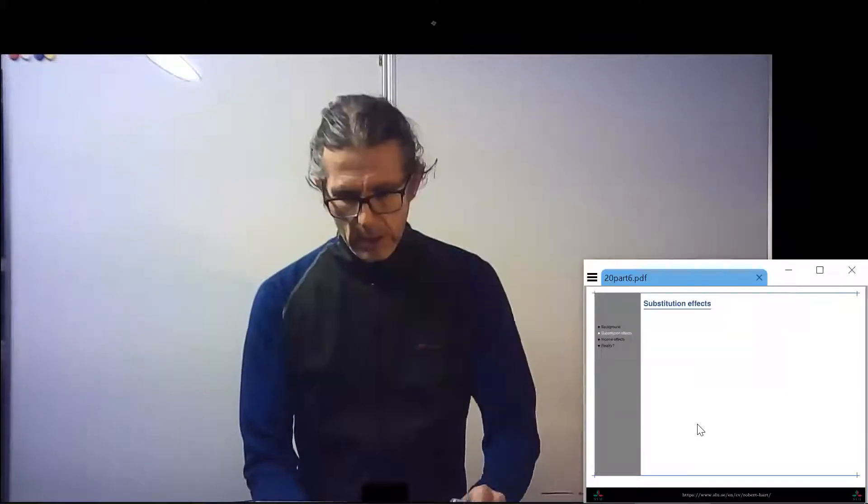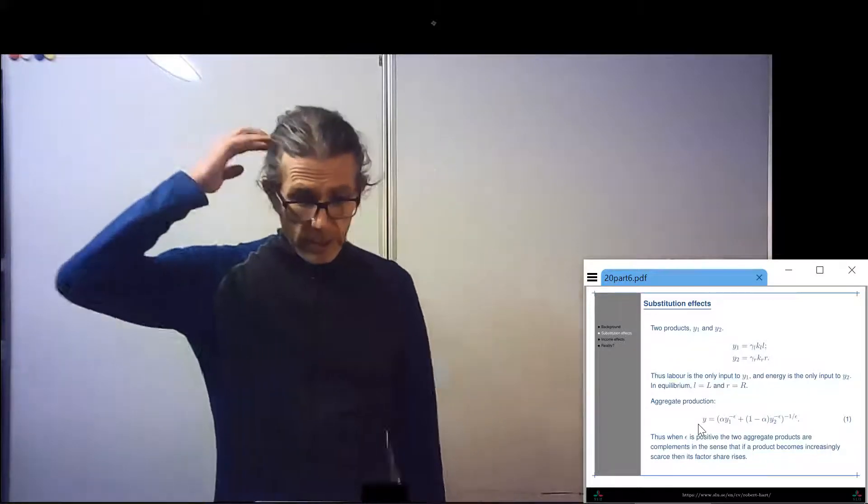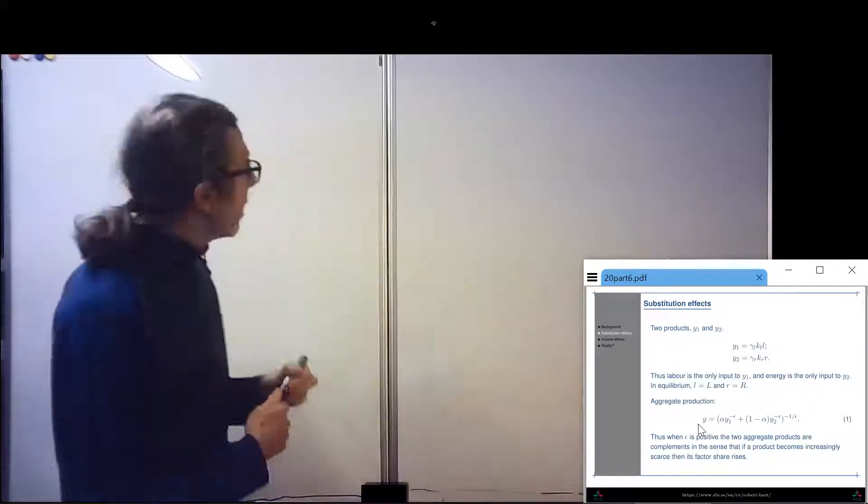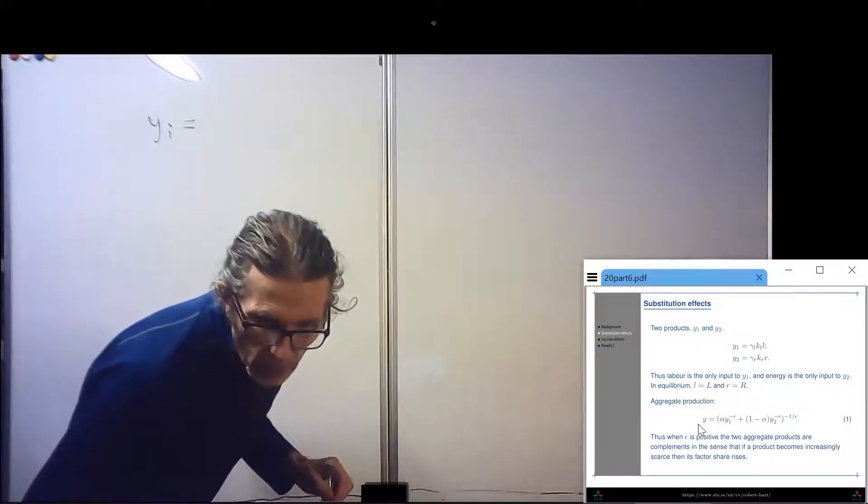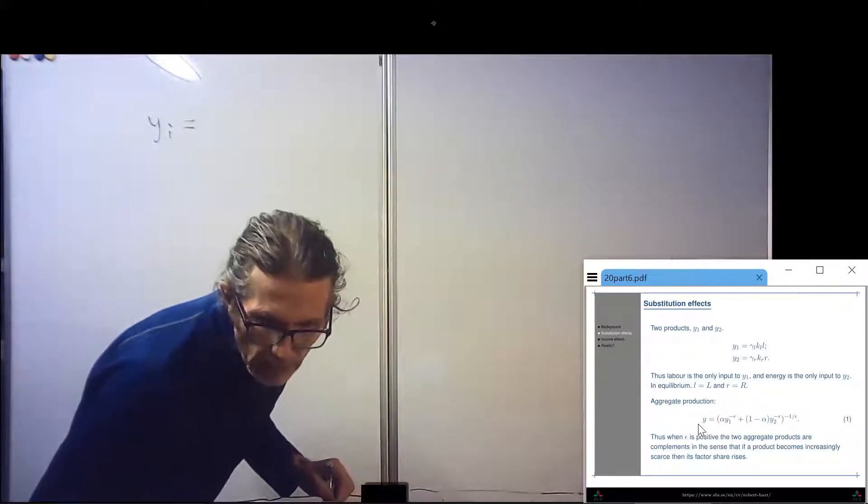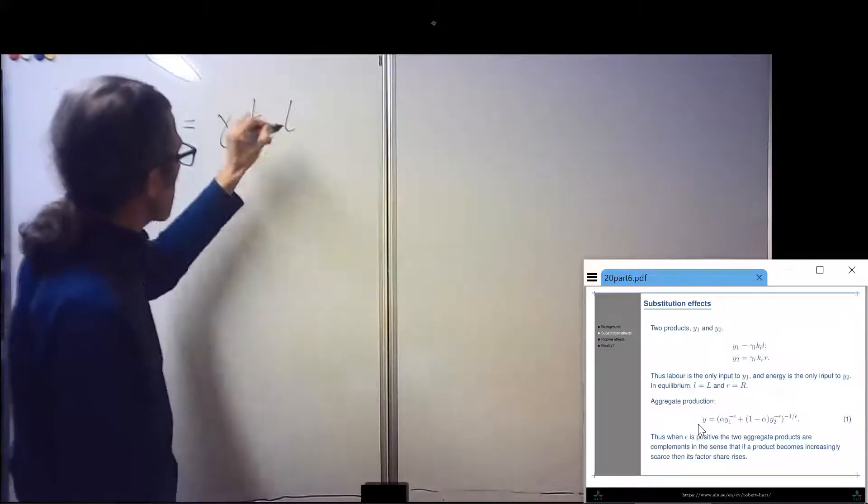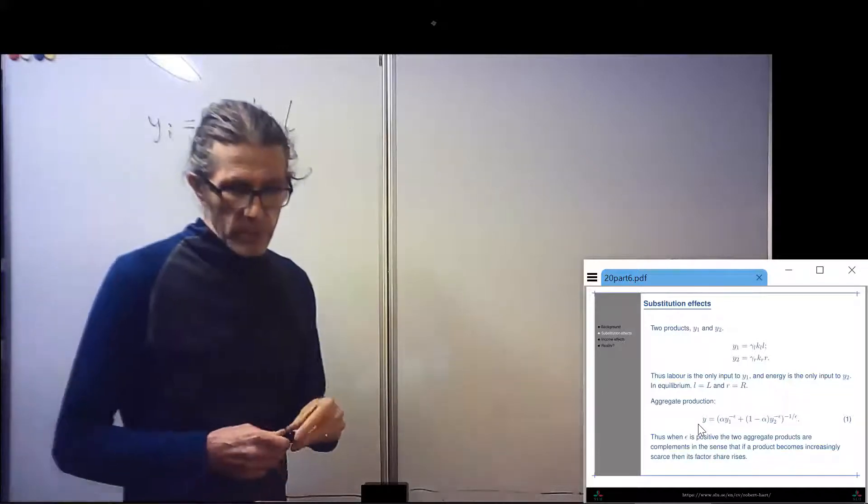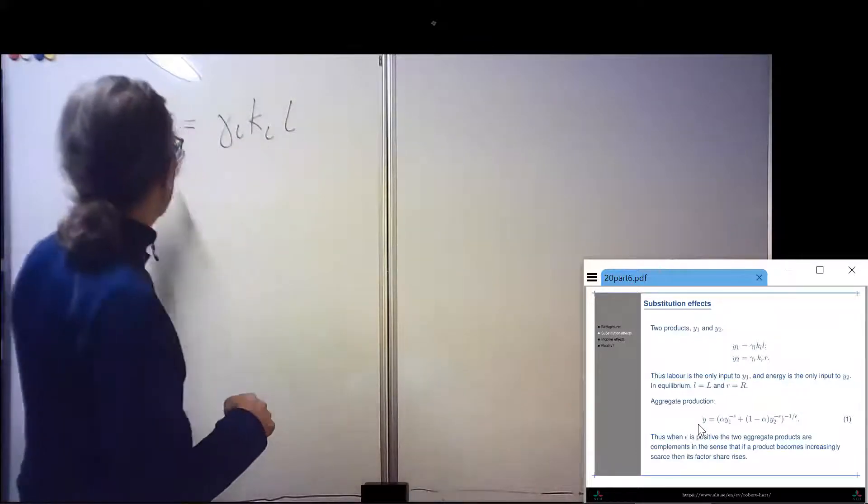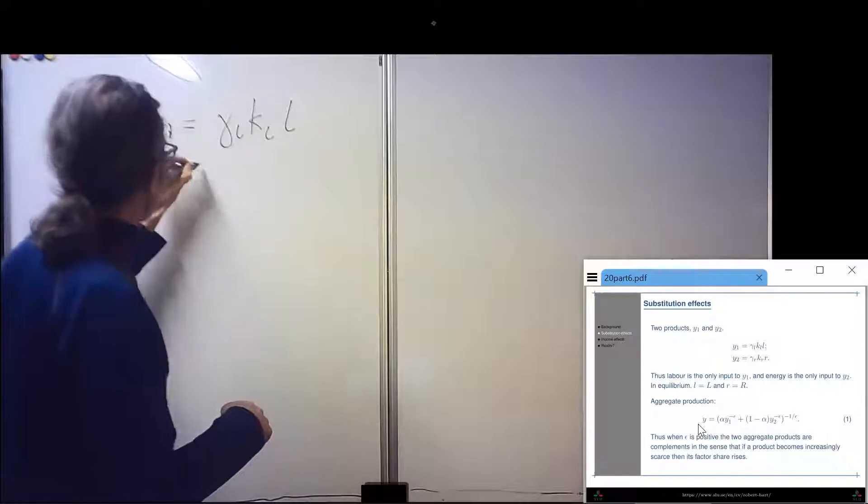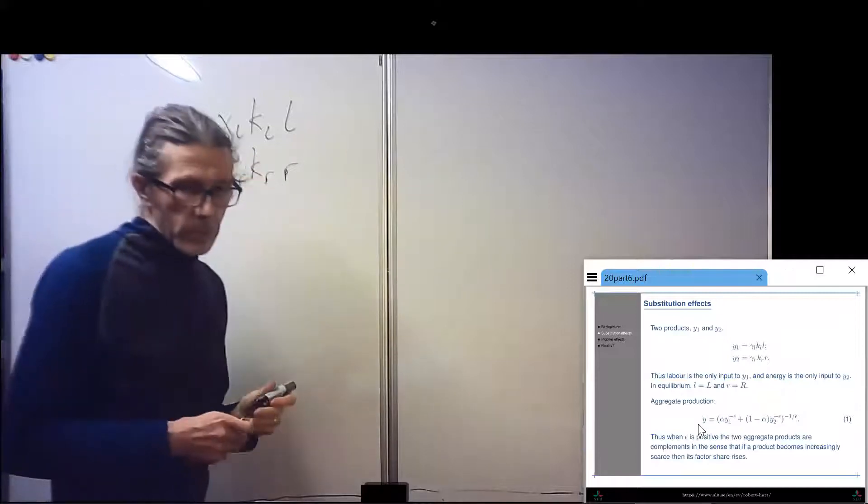So what does our model look like? We've got two products labeled Y1 and Y2. Y1 is gamma L times K L times L. And Y2 is gamma R times K R times R. Those are the production functions.